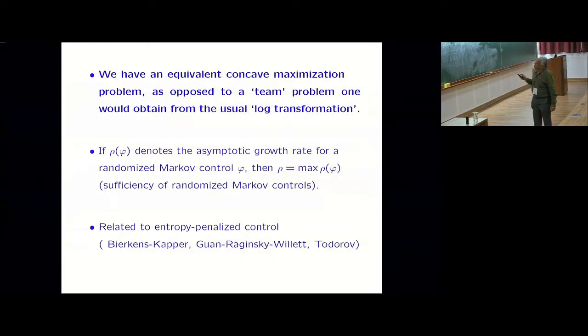Whereas we have a nice concave maximization problem, which is just a maximization problem, nothing else. That's why I highlighted this. Not unexpected - it's enough to consider randomized Markov controls. You don't have to look at control which can use the old entire history. There are some things related to entropy penalized controls.